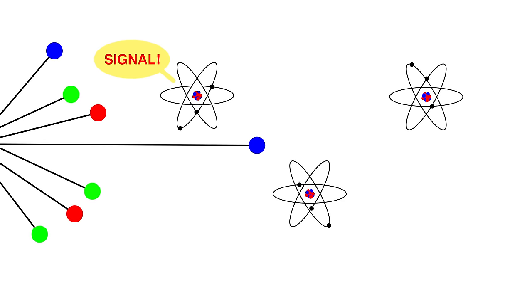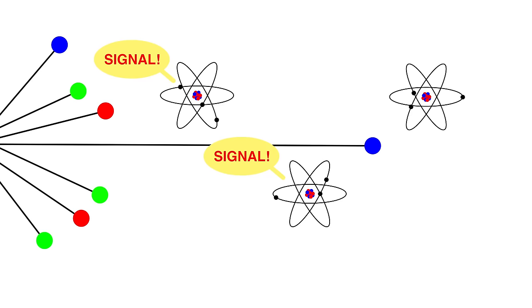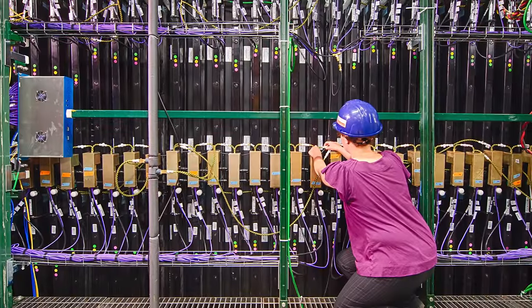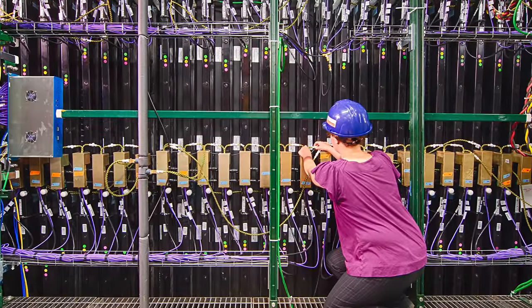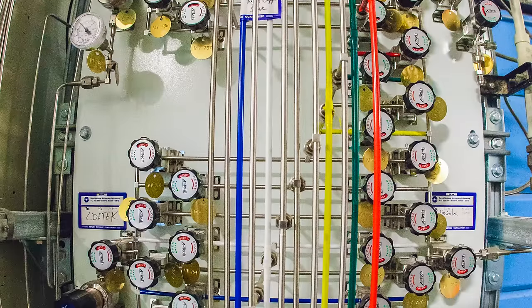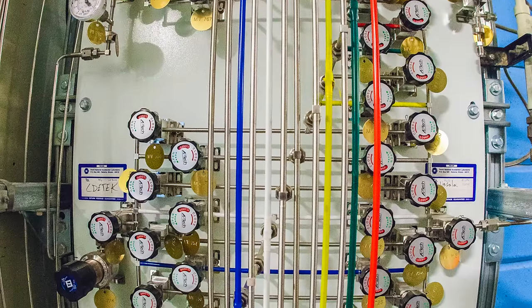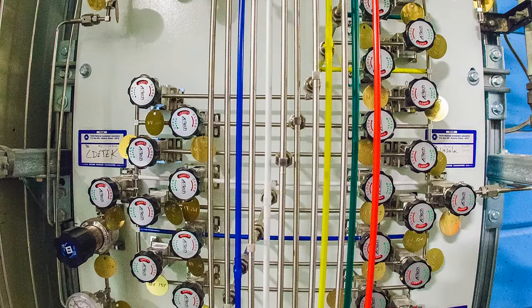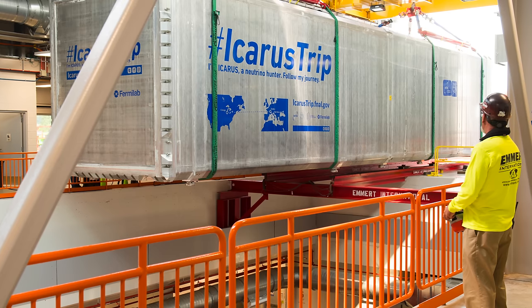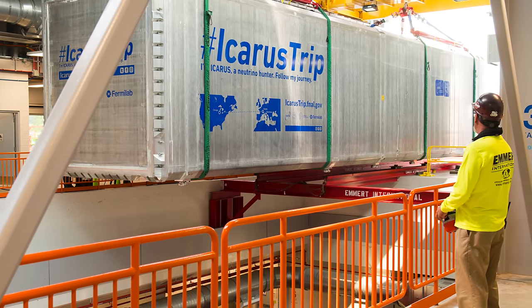However, those particles that come flying out of the destroyed nucleus fly by the atoms in the detector. Depending on the particle detector technology used in an experiment, those secondary interactions make electrical signals or blinks of light that can be detected. There are lots of different technologies employed at Fermilab to detect neutrinos.